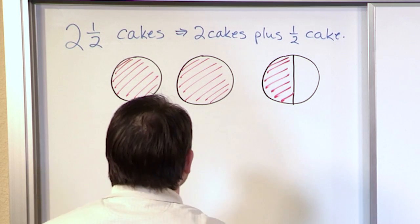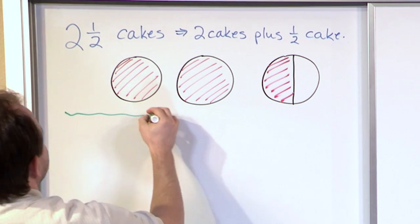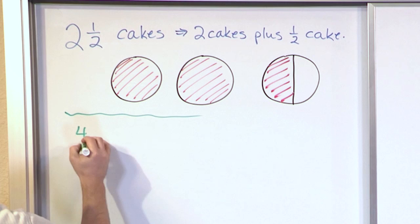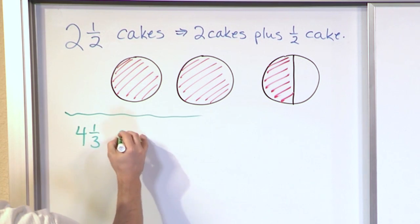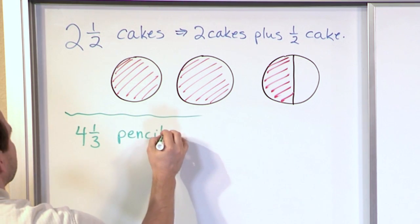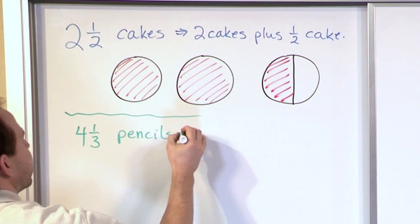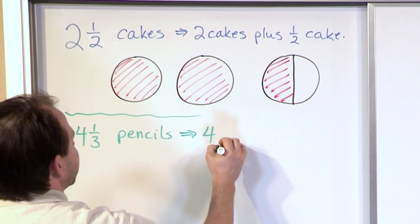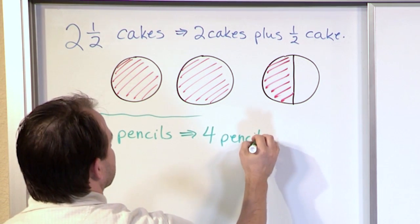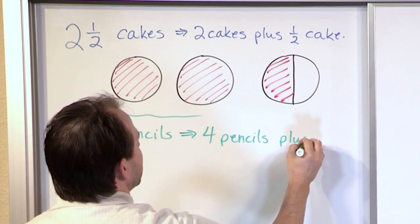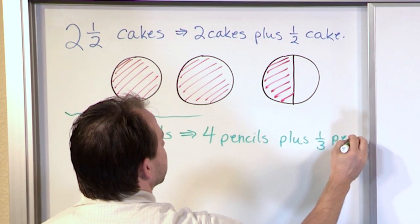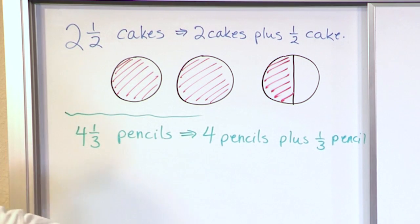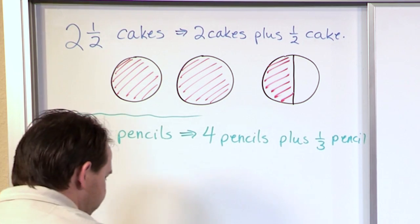Now let's do another one, just to give you a little refresher, a little experience with these. If I have four and a third pencils, what does that really mean? If I have four and a third pencils, it means I have four pencils plus one third of a pencil. So four and a third, exactly the way it sounds.